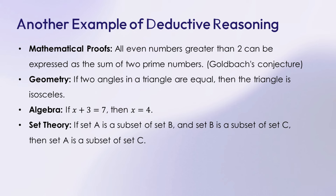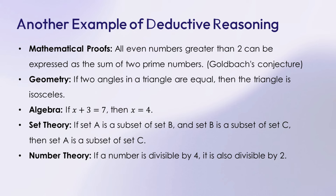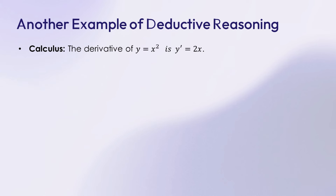Number 3: set theory — if set A is a subset of set B, and set B is a subset of set C, then set A is a subset of set C. Number 4: number theory — if a number is divisible by 4, it is also divisible by 2. Number 5: calculus — the derivative of y equals x squared is y prime equals 2x.